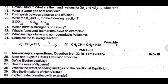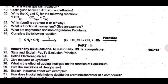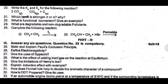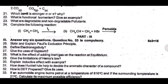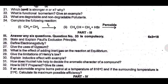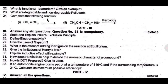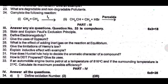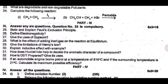This is part three — three marks each. Any six; question number 33 is compulsory. Twenty five — state and explain Pauli's exclusion principle; most important, compulsory. Twenty six — define electron affinity. Twenty seven — give the uses of gypsum. Twenty eight — what is the effect of adding an inert gas to a reaction at equilibrium? Twenty nine — give the limitations of Hess's law. Thirty — explain the inductive effect with an example. Thirty one — how does Hückel's rule help to decide the aromatic character of a compound? Thirty two — how is DDT prepared? Give its uses. Thirty three — if an automobile engine burns petrol at 800°C and the surrounding temperature is 21°C, calculate its maximum possible efficiency.